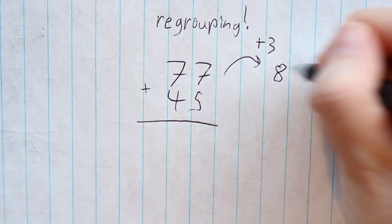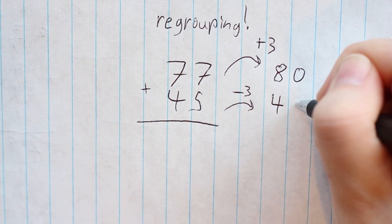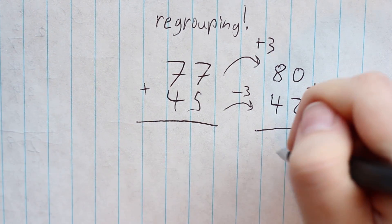But this is the only one that really helps with mental arithmetic. So you can round 77 up to 80, that's plus 3, so just subtract 3 from the other number. 80 plus 42 is so much easier to do in your head.